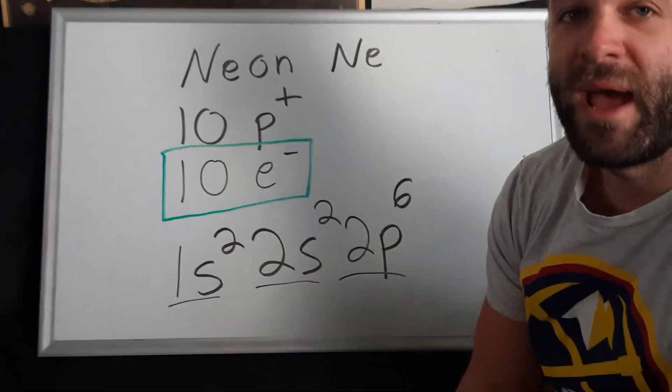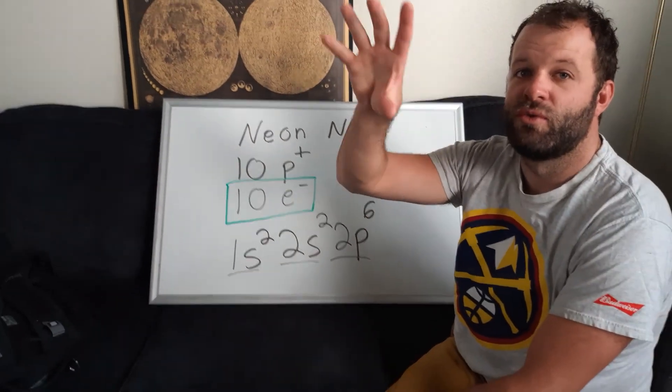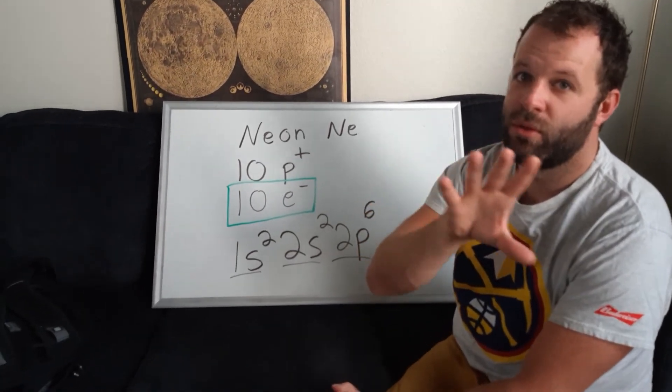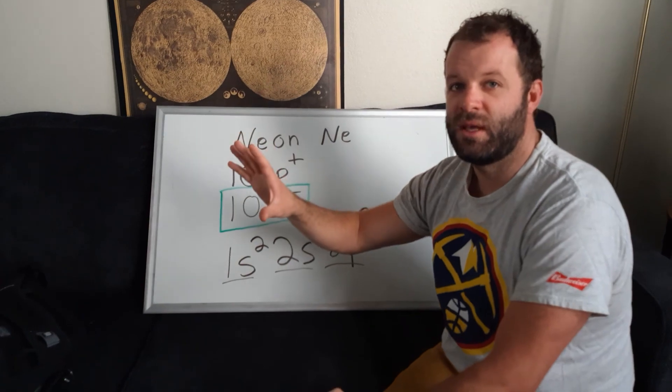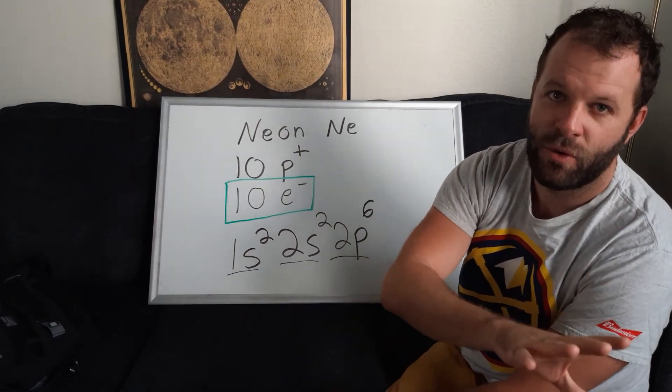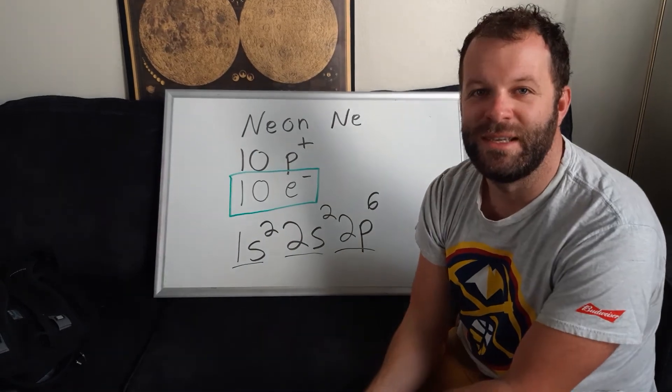And if we had an element past neon, we would just drop a line on the periodic table to the third row, and we would go 3s, 3p. If we had an element past that, we'd just drop a line again, 4s. And we'll talk about the d orbital today.